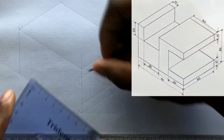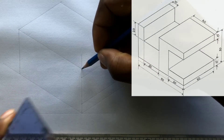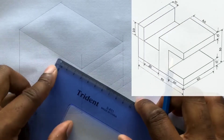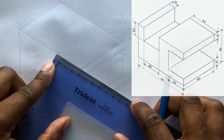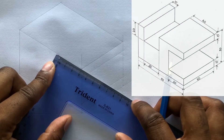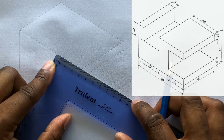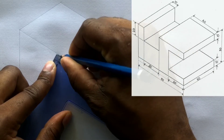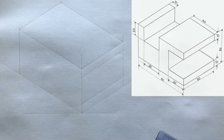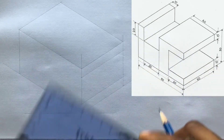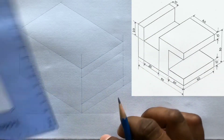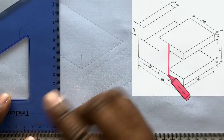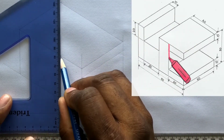Now measure 30 millimeters from this point on this line. Then draw a vertical line using your t-square and your set square from this point.